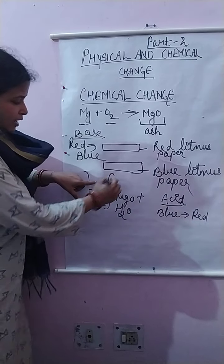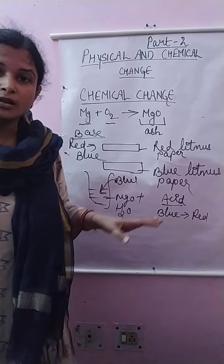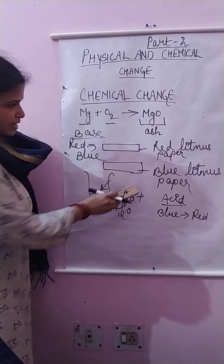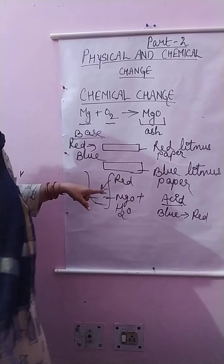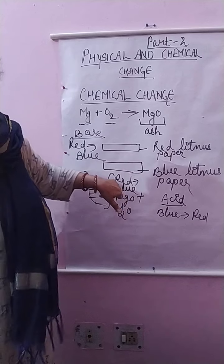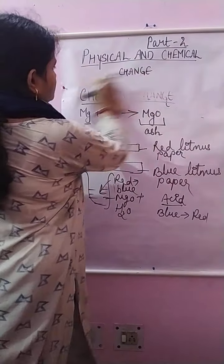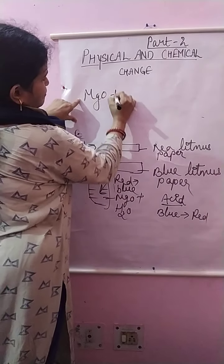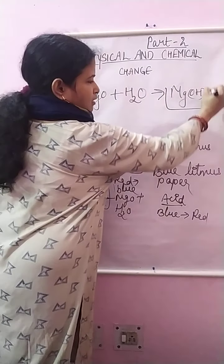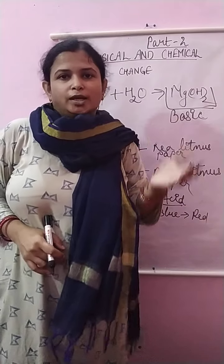If we check using blue litmus paper, no change occurs — it stays blue, which means it is not an acid. And if we dip red litmus paper, it changes to blue color. That means our solution of MgO plus water — which gave us magnesium hydroxide — is basic in nature, because when dipped, the litmus paper turns blue.